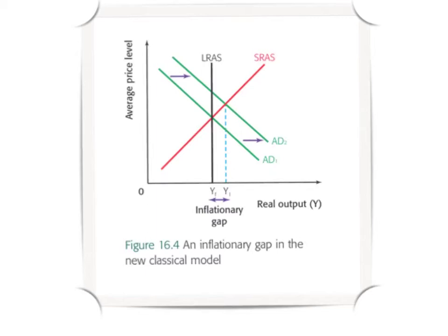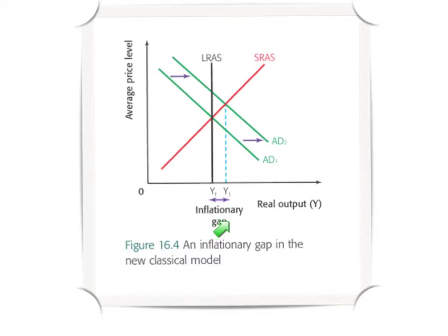Looking at figure 16.4, the aggregate demand has shifted outward. We have a combination of the long-run aggregate supply curve — represented by the black vertical line — and the short-run aggregate supply curve. Initially the economy is at its long-run equilibrium, but if there's an increase in aggregate demand, a shift from AD1 to AD2 due to changes in any component of aggregate demand — C plus I plus G plus X minus M — then in the short run there will be an increase in output from YF to Y1. The economy would be experiencing what is known as an inflationary gap, where the economy is in equilibrium at a level of output greater than the full employment level.